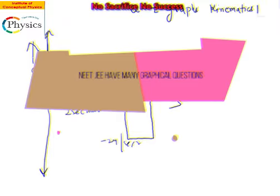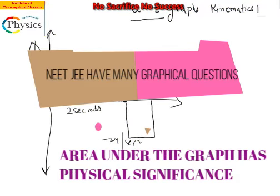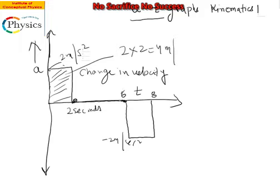Now, apart from this, the very important characteristic of AT graph is that the area under the curve of an AT graph tells you about the change in velocity, how much velocity changed. So if you calculate this area, which will be length into breadth, two into two, it will be four meter per second. This is the change in velocity.